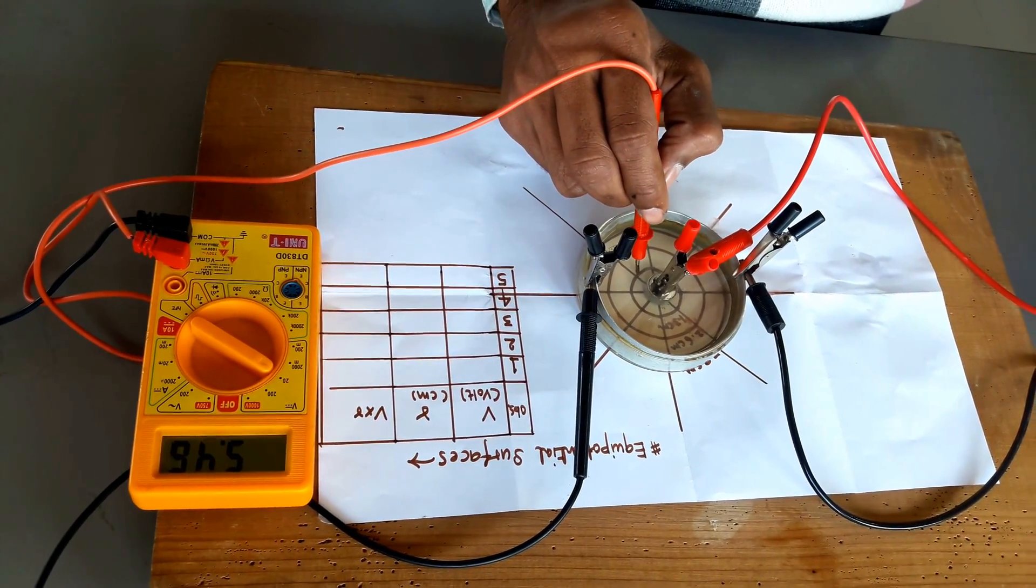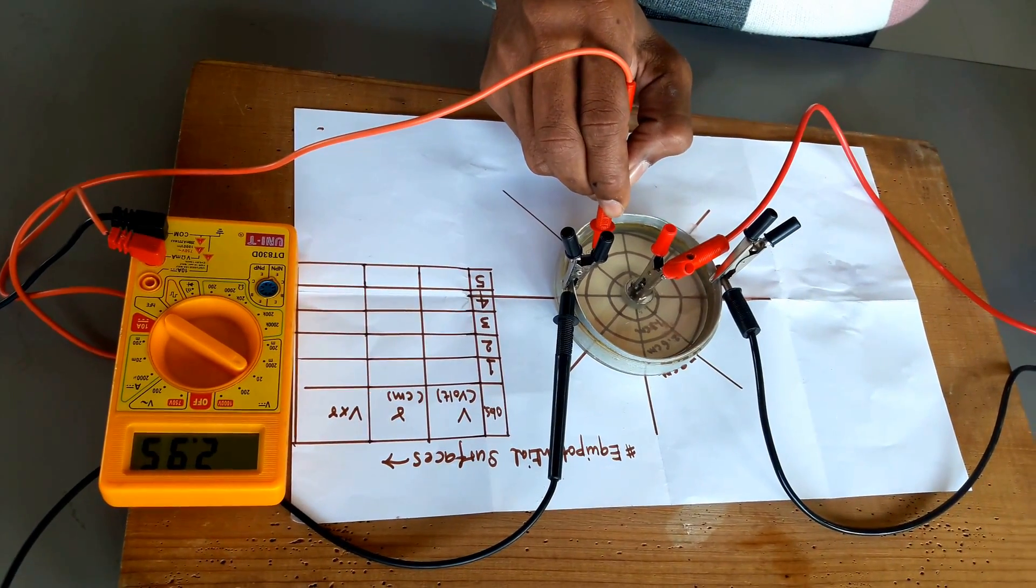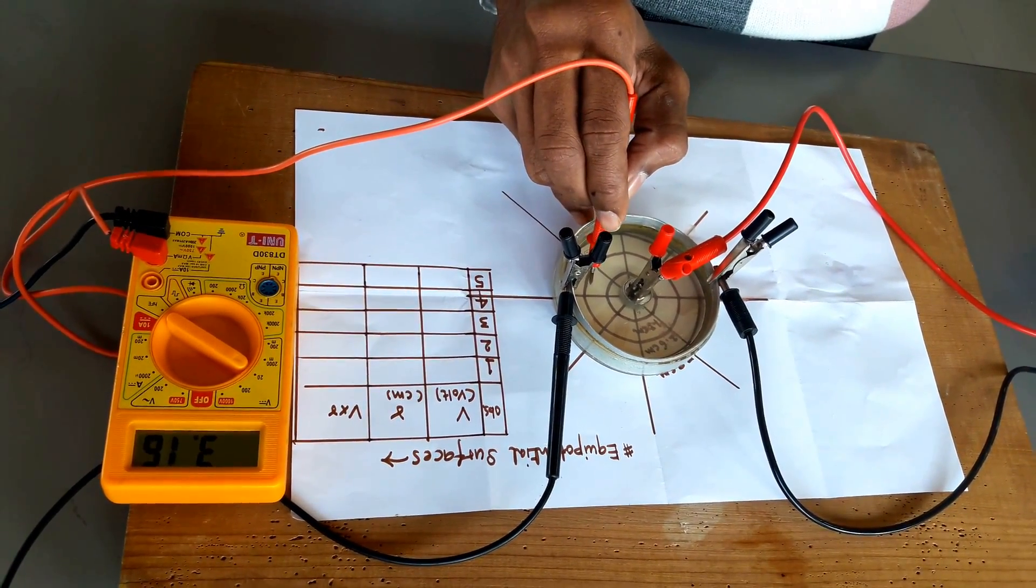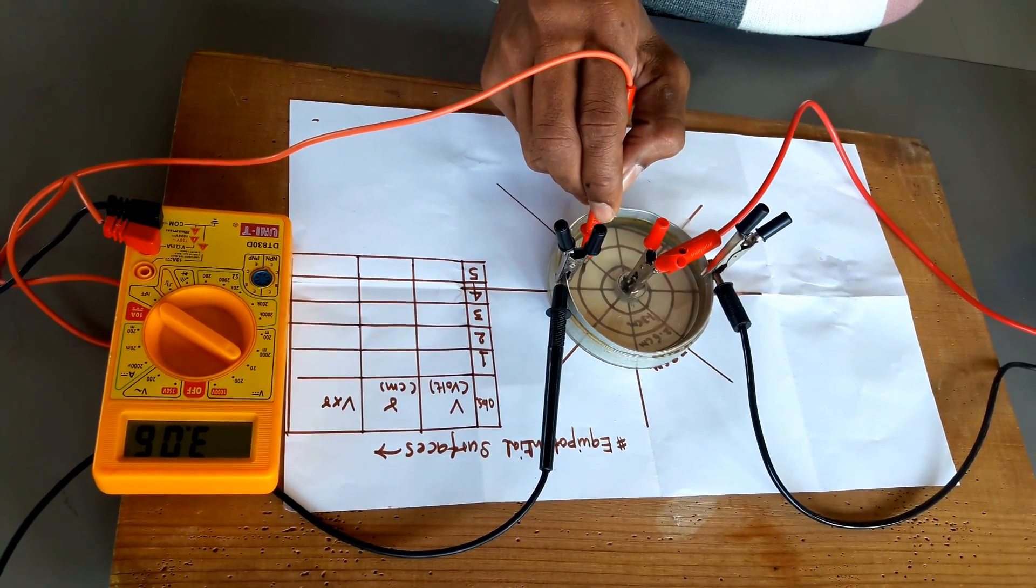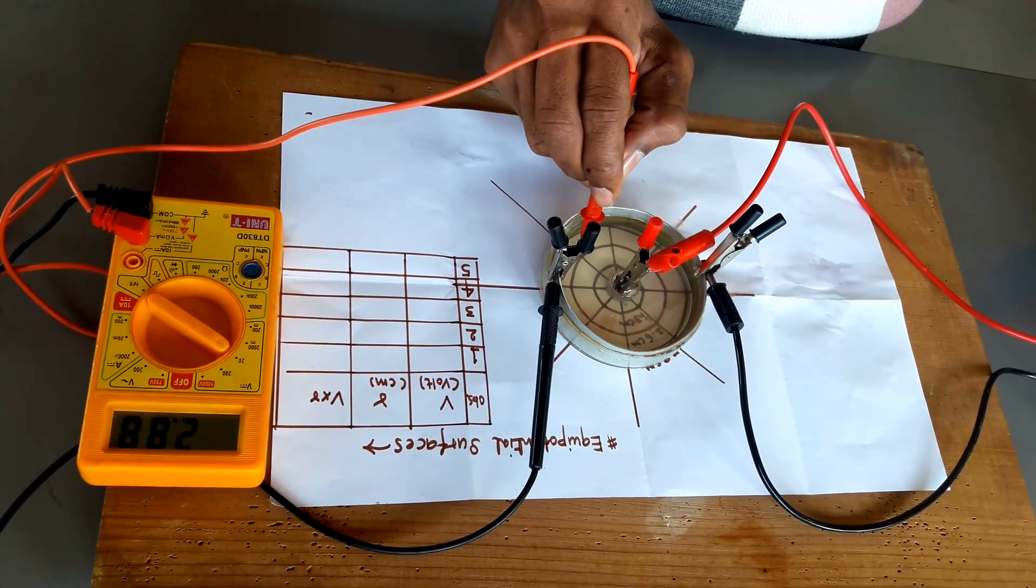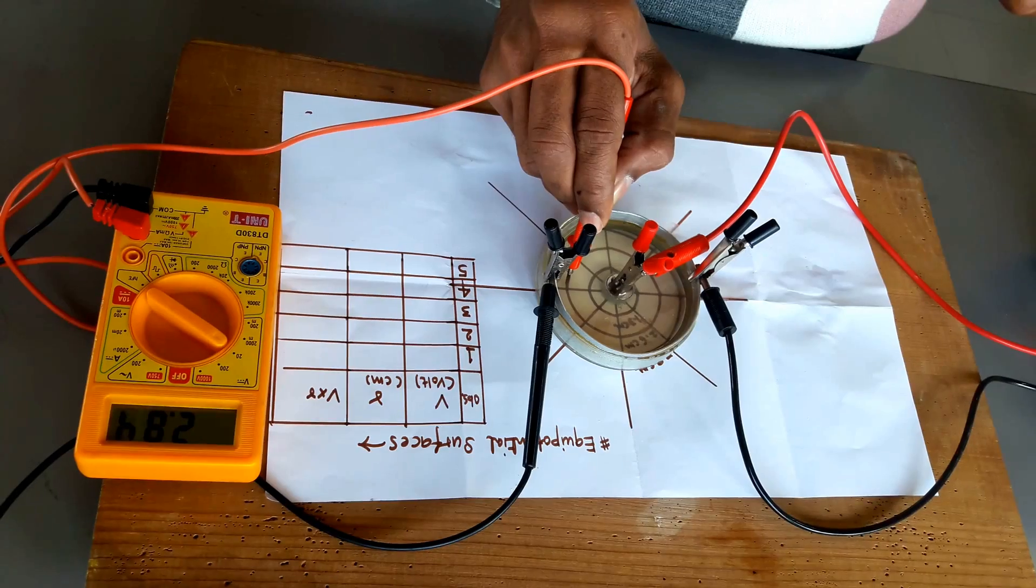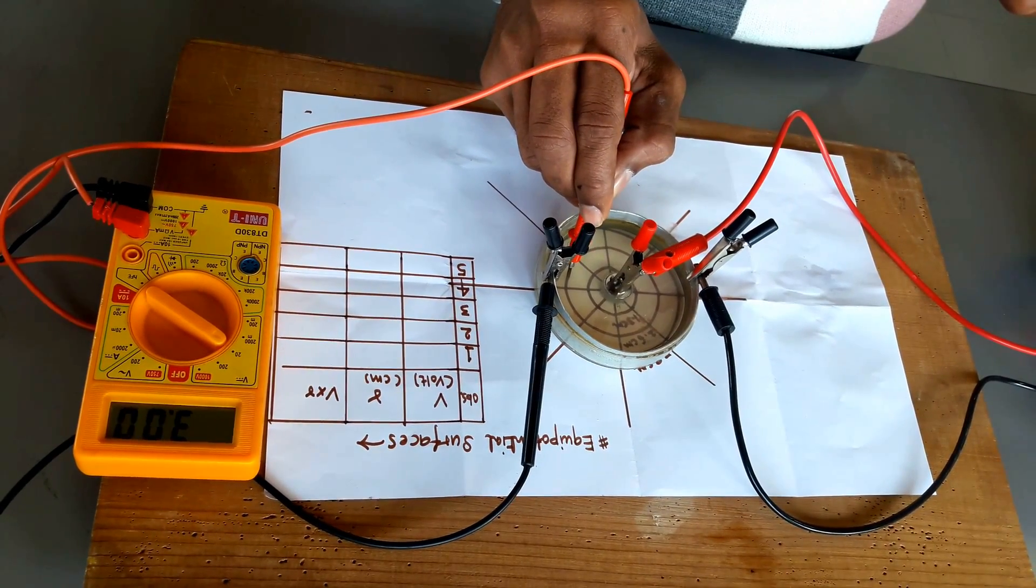On the second circle as we are approaching, we are able to see the voltage is reducing, the potential is reducing. On an average it is coming near about 3. I am rotating the electrode of the multimeter but it is remaining nearby 3, 2.95 or 3.